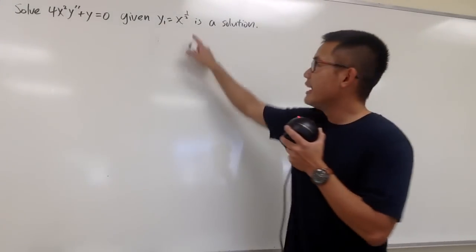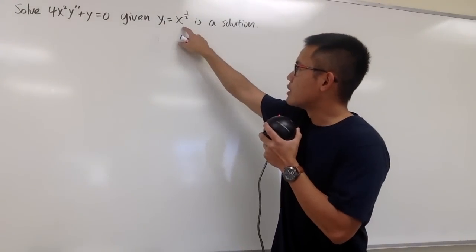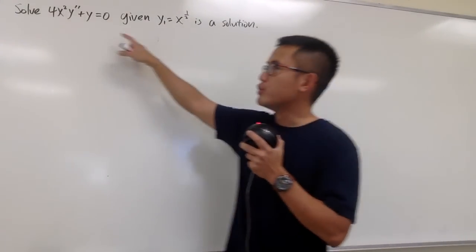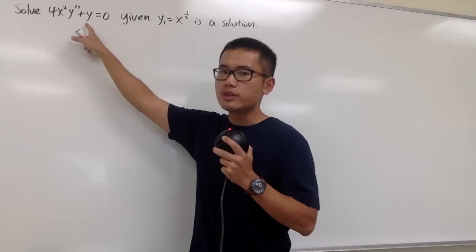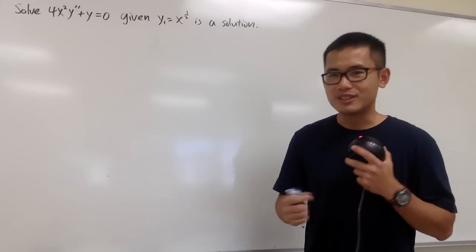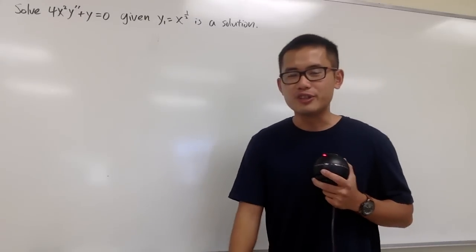We're given that x to the 1/2 power, namely the square root of x, is a solution to this differential equation, and we're going to find the other one so we can solve the differential equation.